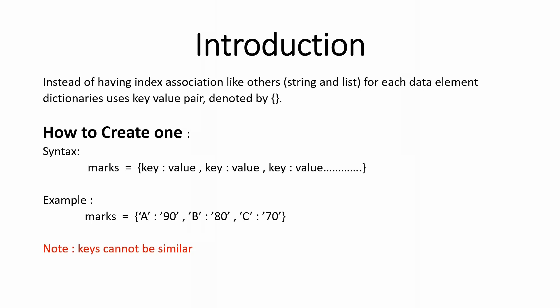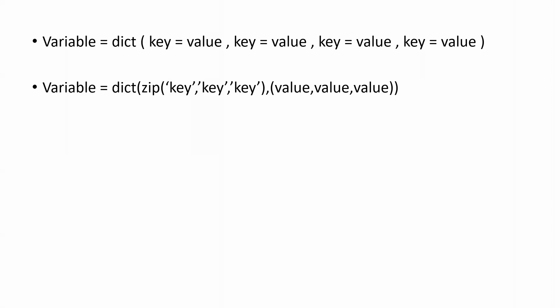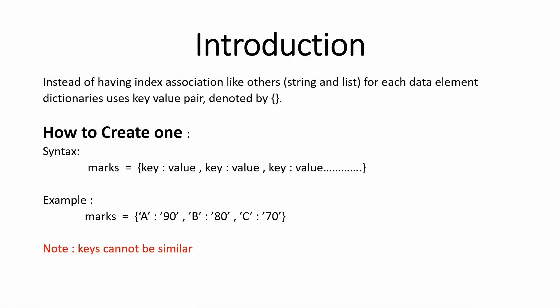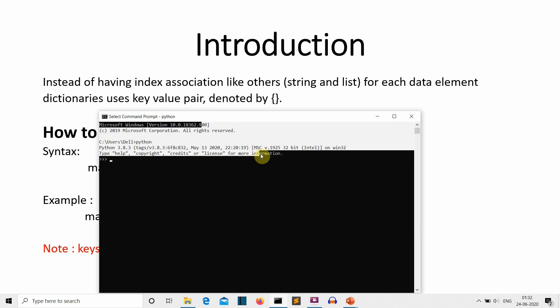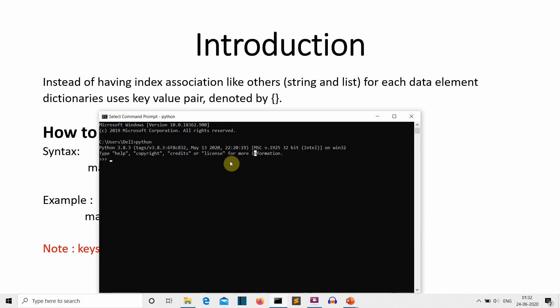There are multiple methods to create a dictionary; we'll discuss three of them. The simplest is to use curly brackets — curly brackets denote a dictionary, just like square brackets denote a list. For example, we create a dictionary 'a' with key1 having value 'a', key2 having value 'b', and key4 having value 'c'.